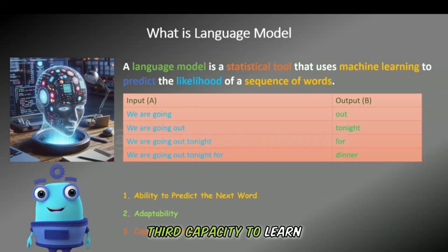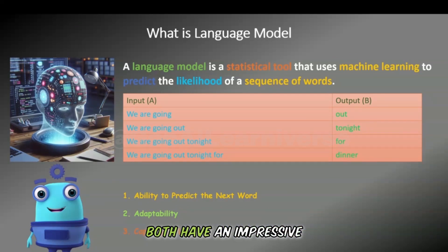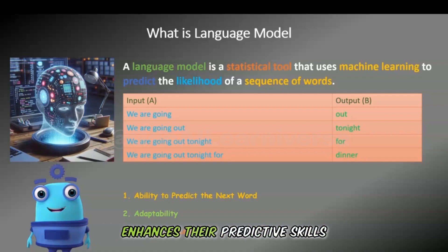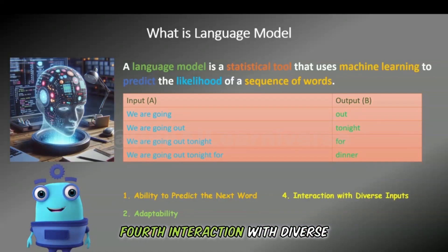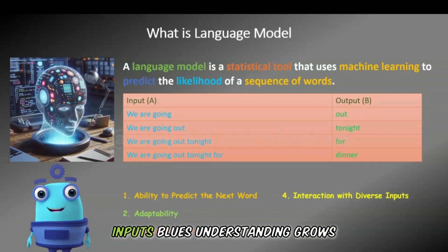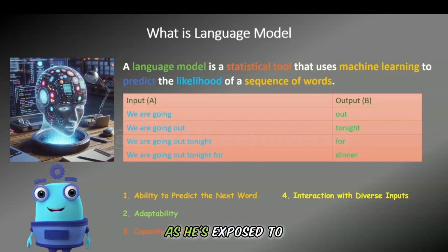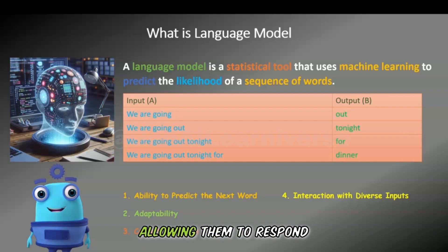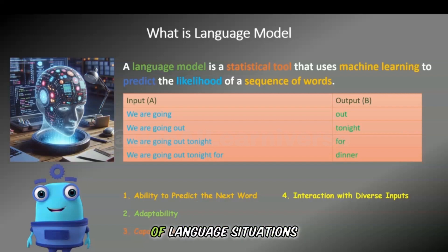Third, capacity to learn: Blue and language models both have an impressive ability to absorb and recall information, which continuously enhances their predictive skills. Fourth, interaction with diverse inputs: Blue's understanding grows as he's exposed to various family dialogues. In a like manner, LMs learn from a vast array of textual data, allowing them to respond appropriately in a multitude of language situations.